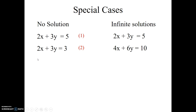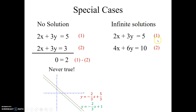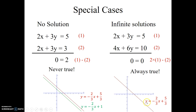Two special cases. First: no solution. If subtracting the two equations gives 0 equals 2 — which is never true — there are no values of x and y that satisfy both equations simultaneously. This happens because the lines are parallel and never intersect. Second: infinite solutions. If doubling the first equation and subtracting gives 0 equals 0 — always true — that's because the two equations are actually the same line, so any point that satisfies one satisfies the other.